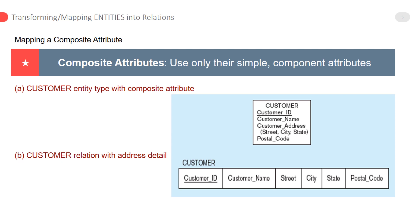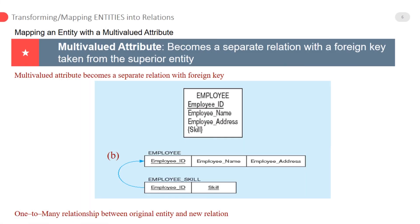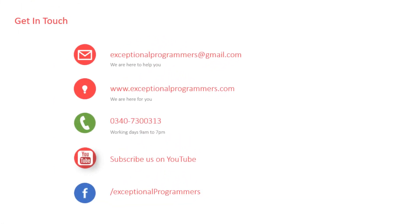The last mapping is for an entity with a multi-valued attribute. A multi-valued attribute becomes a separate relation with a foreign key taken from the superior entity. If you are new, watch my previous videos.